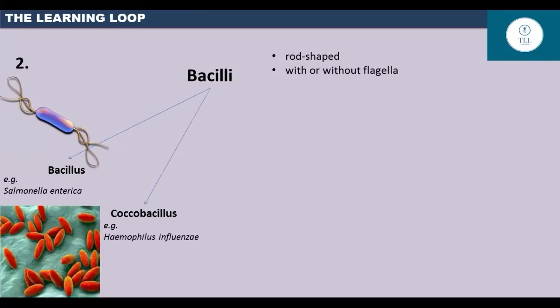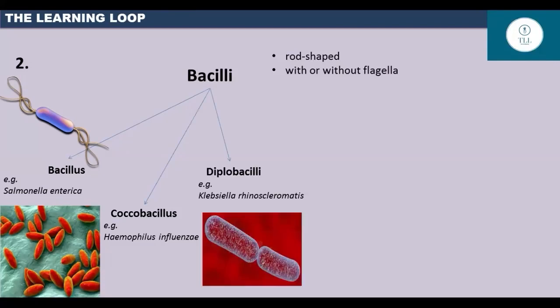The next is coccobacillus. It is short and oval in shape and appears like a coccus. Diplobacilli are basically two rods attached to each other. For example, Klebsiella rhinoscleromatis.